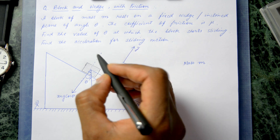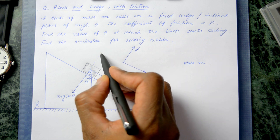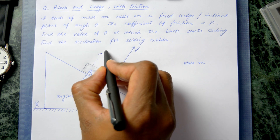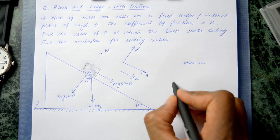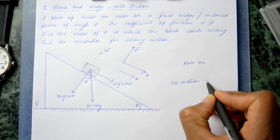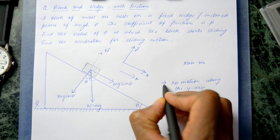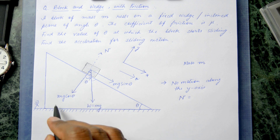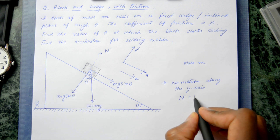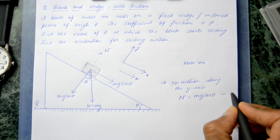Since the object is not moving along the y-axis, the forces must be balanced. The component mg cosθ is balanced by the normal reaction force N. So there is no motion along the y-axis, which means N = mg cosθ. This is equation number one.